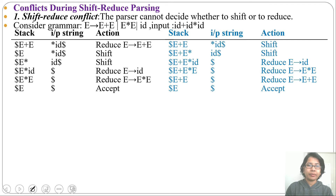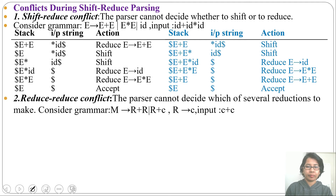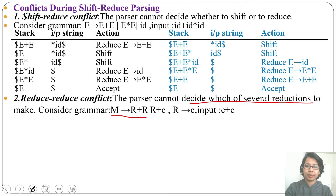Let's discuss reduce-reduce conflict. If a parser is confused between more than one reduction — that is, which reduction to perform — then that is a reduce-reduce conflict. If a parser cannot decide which of several reductions to make, that is a reduce-reduce conflict. Let's take a grammar: M derives R plus R; R derives R plus C; and R derives C.